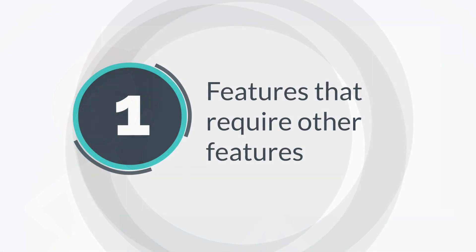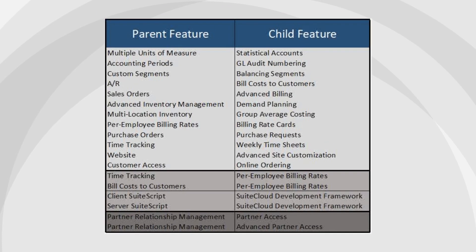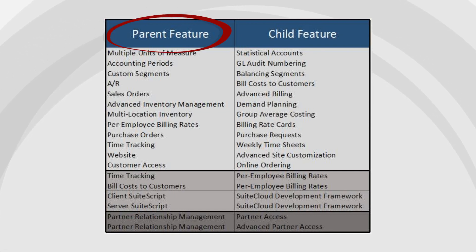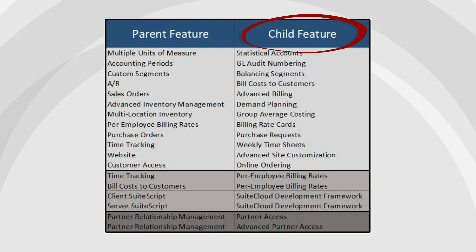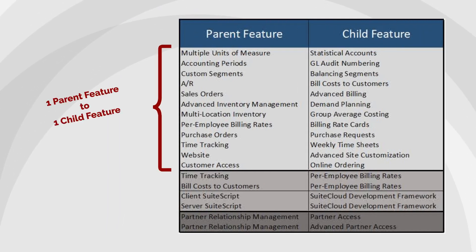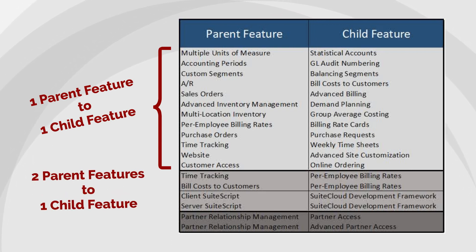First, let's look at the features that require other features. In this chart, you can see some of the main features like this. Parent features are the ones needed to support other features, while the features they support are the child features. While most child features have just one parent feature, notice that certain child features need two parent features.